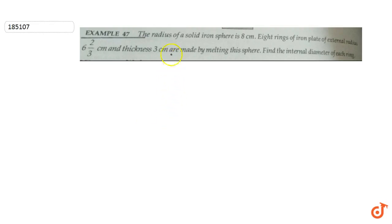The question is: the radius of an iron solid sphere is 8 centimeters. I am given an 8 centimeter iron sphere, and eight rings of iron plate of external radius 6 and 2/3 centimeters.